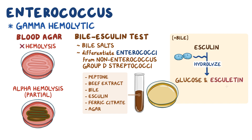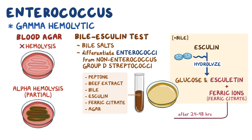Then esculitin reacts with the ferric ions supplied by ferric citrate and forms a black diffusible complex. So after 24-48 hours, enterococci cause a diffuse blackening of more than half of the tube, or black halos around colonies on plates.